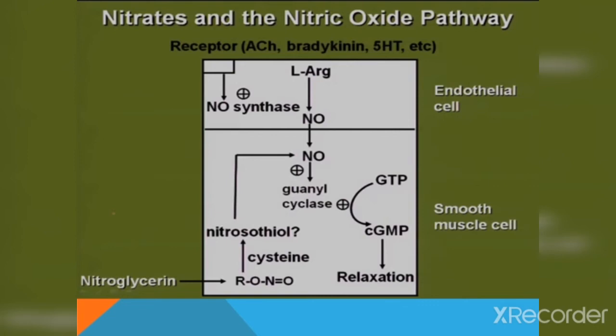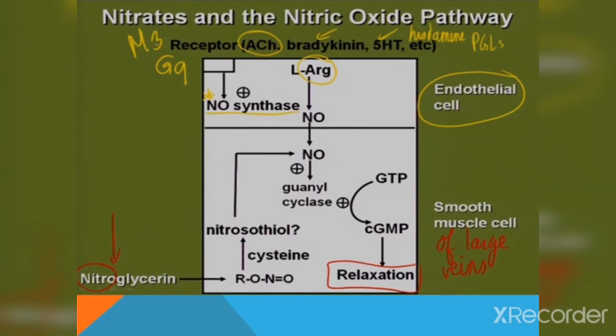As you can see on the slide, nitric oxide is synthesized in the endothelial cells from amino acid L-arginine. This reaction is catalyzed by nitric oxide synthase, which itself is stimulated by Gq proteins. Nitric oxide readily diffuses into the smooth muscles of the large veins where it activates guanylyl cyclase enzyme, which catalyzes the conversion of GTP to cyclic GMP and causes relaxation. Certain biochemical mediators of inflammation such as bradykinins, serotonin, histamine, prostaglandins and leukotrienes also utilize Gq proteins for nitric oxide-mediated relaxation of smooth muscles of large veins.